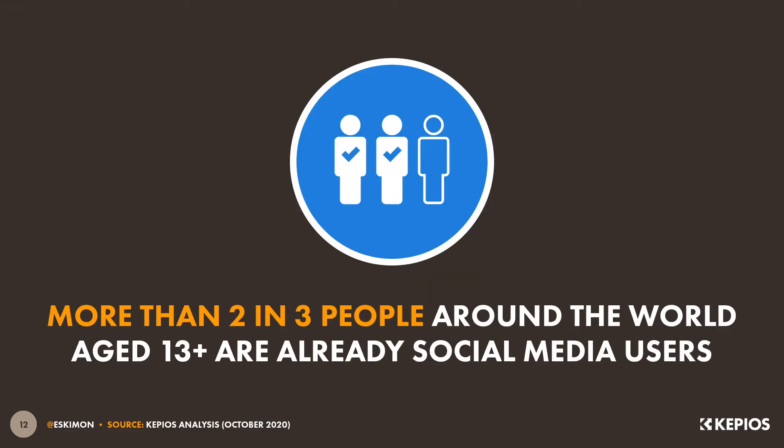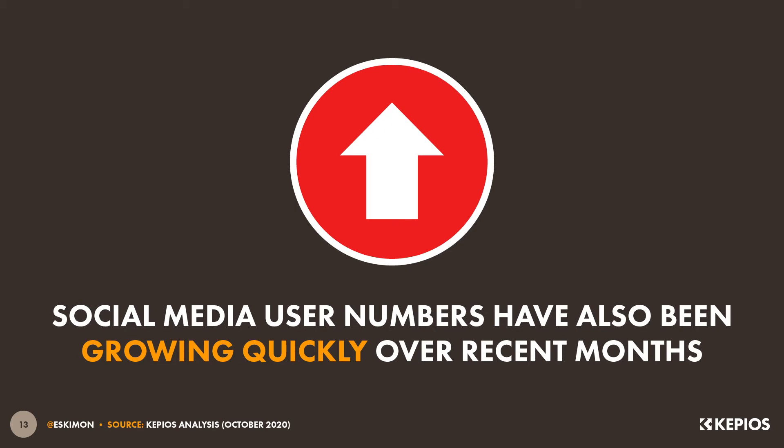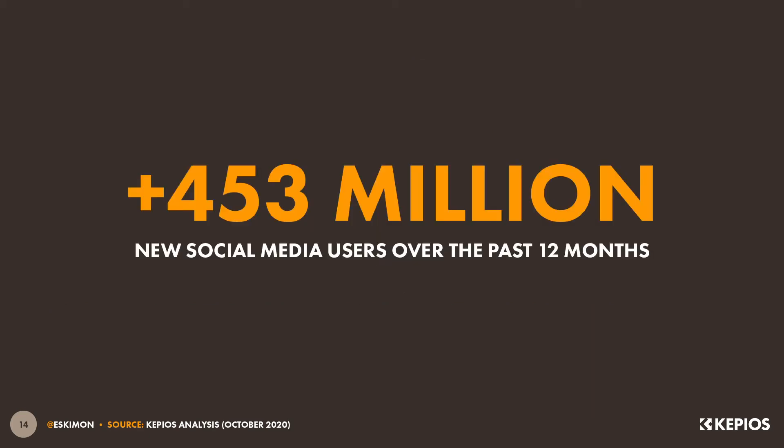However, it is worth noting that most social media companies restrict the use of their platforms to people aged 13 and above. So if we compare the number of social media users to populations in eligible age groups, the data show that more than two-thirds of all those people who can use social media already do. User numbers have been growing quickly over recent months too, with global social media users increasing by more than 450 million in the past 12 months, equating to year-on-year growth of more than 12%.